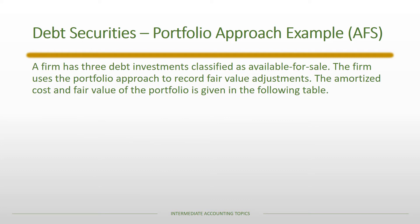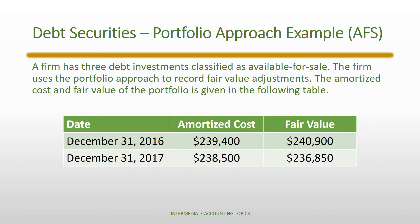Let's use an example. We're going to use an available-for-sale security. Assume that a firm has three debt investments all classified as available for sale, and it uses a portfolio approach to record fair value adjustments. The amortized cost and fair value of the portfolio are given in the table. On December 31st, 2016, there is an amortized cost of $239,400 and the fair value at that time was $240,900.